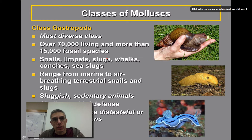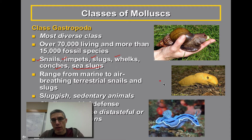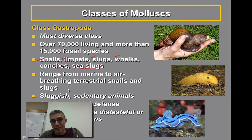In this particular screencast, we're going to look at the group that contains the snails, the limpets, the slugs, the whelks, the conches, and the sea slugs. The sea slugs would be a type of marine gastropod. They can range from marine to air-breathing terrestrial snails and slugs, so you can find them both in the water and on land.